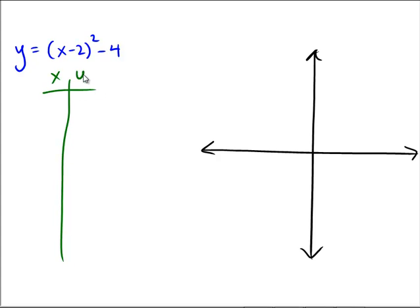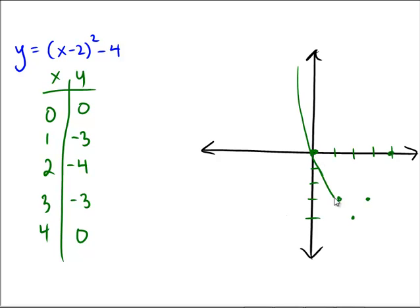Hopefully you got 2 as your middle point, going down 2, up 2, -4 as your y-coordinate of that vertex, and then you went up 1, up 3, and put the same numbers on the opposite side, and then graphed all of those points: (0,0), (1,-3), (2,-4), (3,-3), and (4,0). And again, it should look like almost the exact same type of parabolic shape.